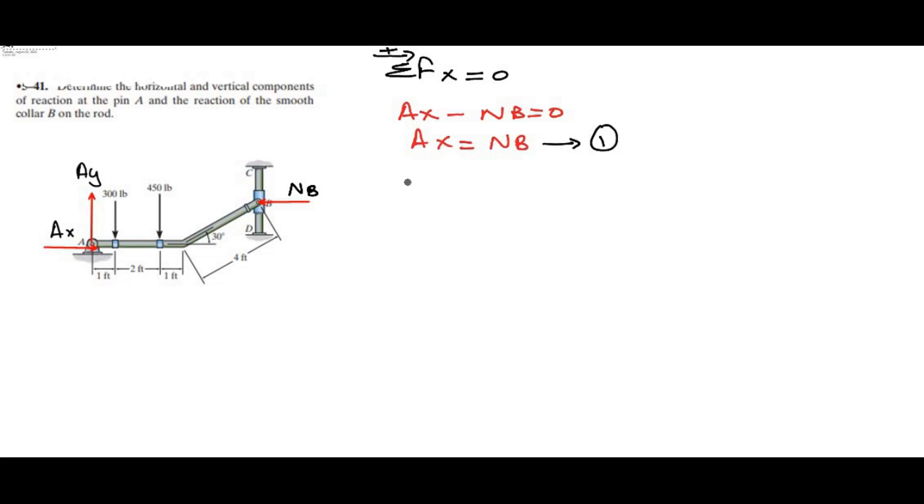Similarly, I have another equation which is sum of the forces in the y direction equals to 0. So I have AY minus 300 minus 450 equals to 0. So AY is equal to 750 lbs.